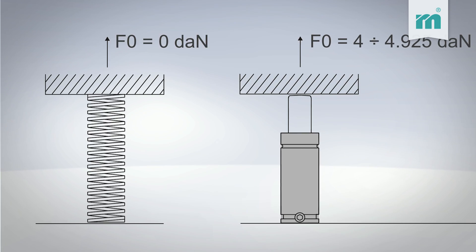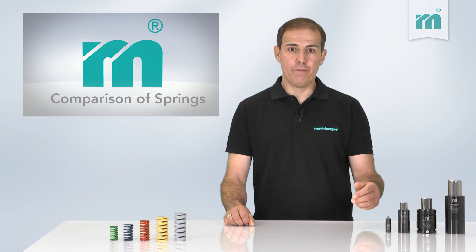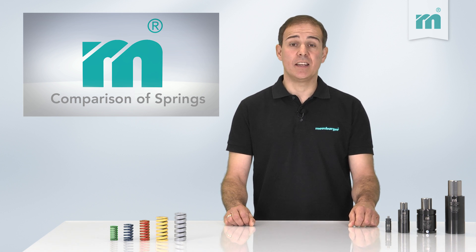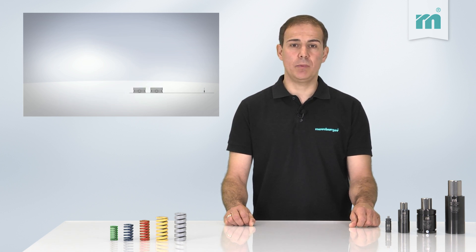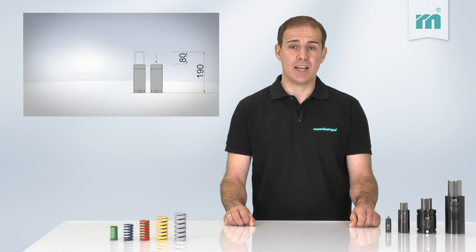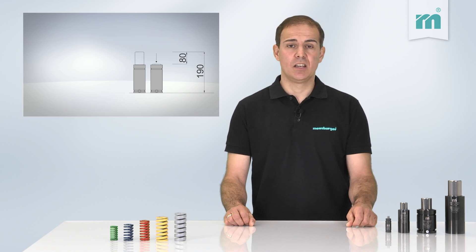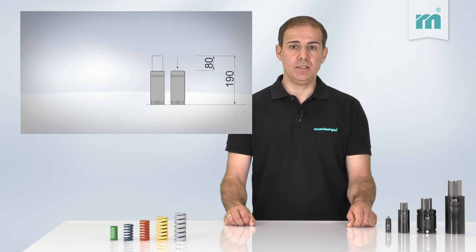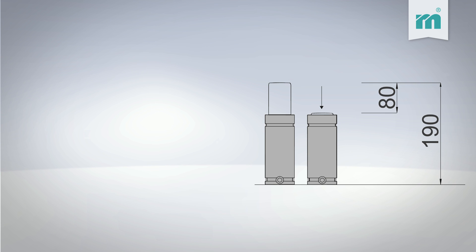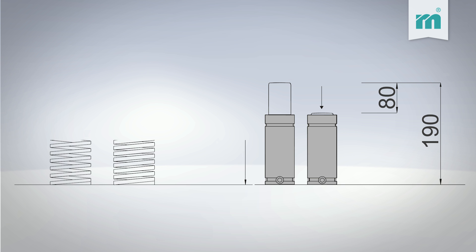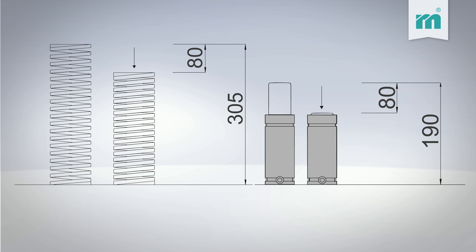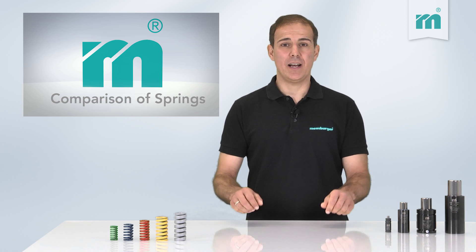While with gas springs the entire initial force is available at the beginning of the stroke, the system compression springs have to be preloaded. While offering the same stroke, the installation height is considerably reduced. For example, the installation height of gas springs needed for obtaining a stroke of 80 mm is only 190 mm, while the matching system compression spring requires 305 mm.